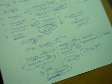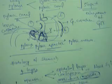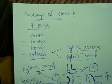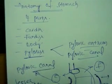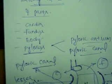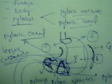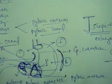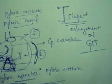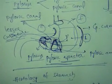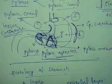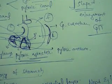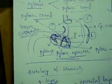This is all about the anatomy and histology of the stomach. Looking at the image of the stomach, in the anatomy we can find four parts: cardia, fundus, body, and pylorus. The pylorus is divided into two parts: pyloric antrum and pyloric canal. The stomach is J-shaped, an enlargement of the GIT. We can also observe the greater curvature and the lesser curvature on the image.